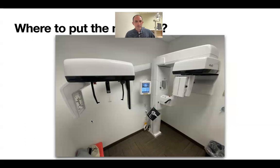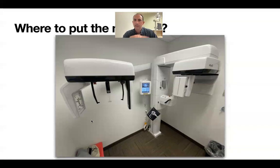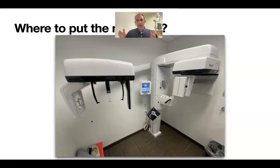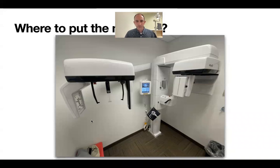This is what our machine looks like. We have the ceph attachment. Where it sits now is where our previous panel used to sit. If I had it to do all over again, I would not have gotten the ceph attachment — that would have saved us some money. I would have left the original pano with the ceph in the room it was in, and put the new machine in the smaller x-ray room at an angle coming out of the corner, because it's so big. Food for thought.